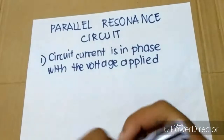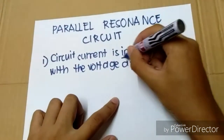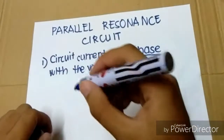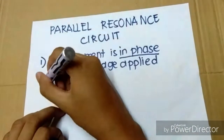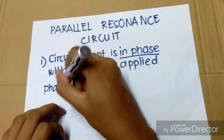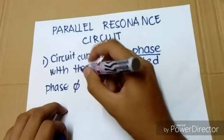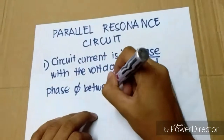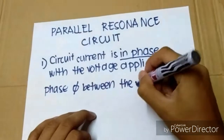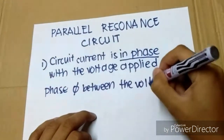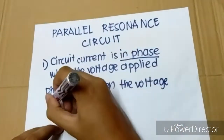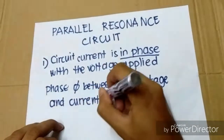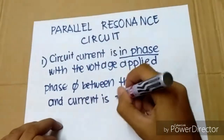What does 'in phase' mean? In phase means the phase angle between the voltage and current is zero.